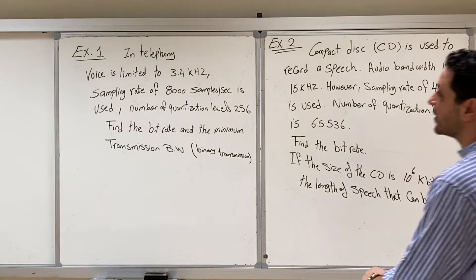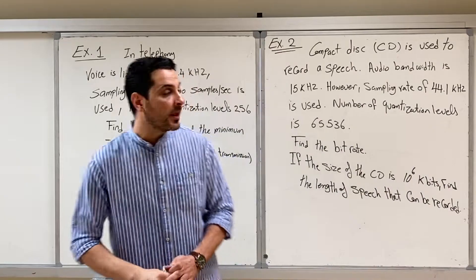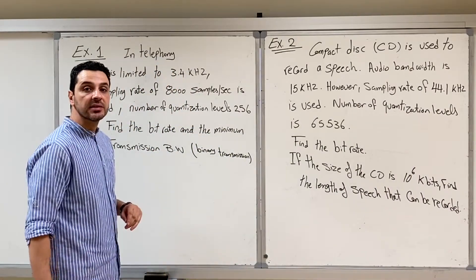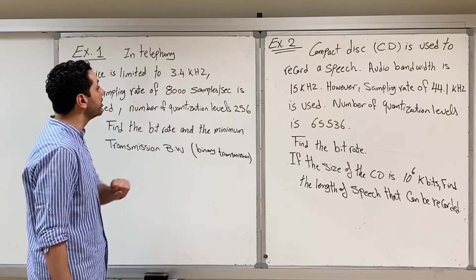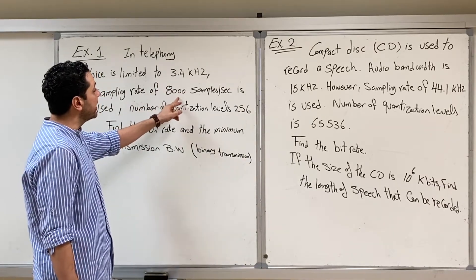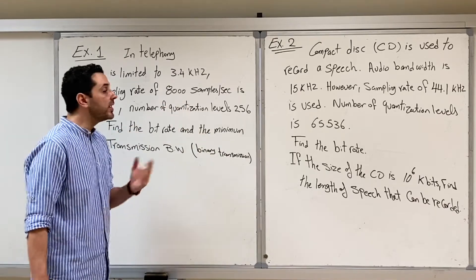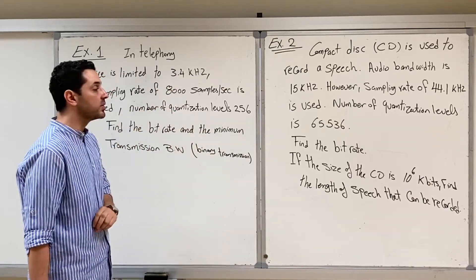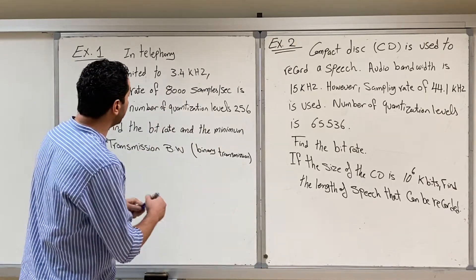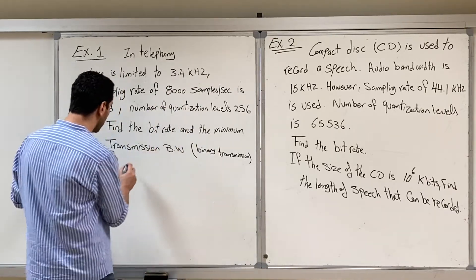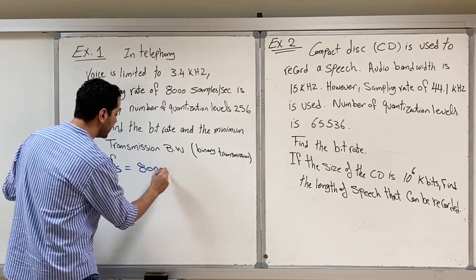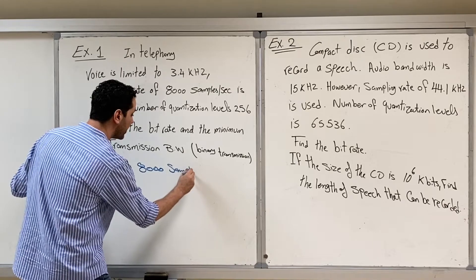Here we are going to solve a couple of examples on PCM. Example number one says that in telephony, usually the voice signal is limited to 3.4 kHz. However, the sampling rate is 8,000 samples per second, which means we usually sample higher than the Nyquist rate. So F_S is 8,000 samples per second.